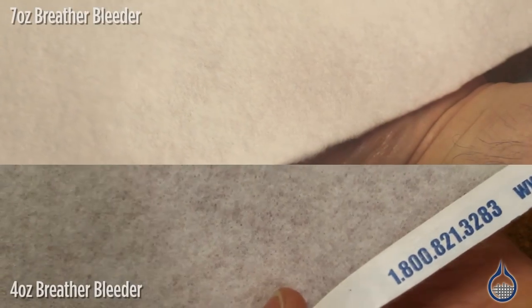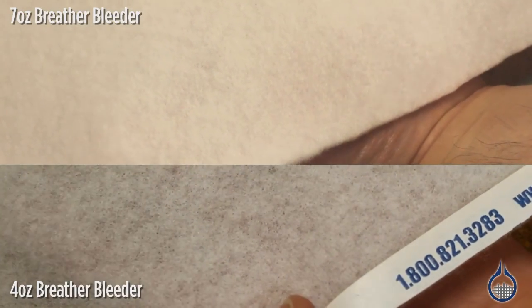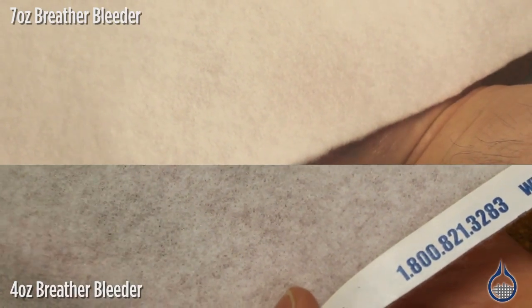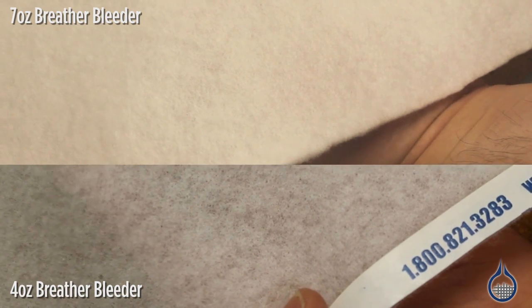Compared to the 579, the 1779 7-ounce breather bleeder will absorb more resin from the laminate, which can result in a dry part if less carefully controlled.